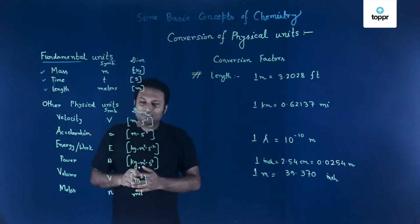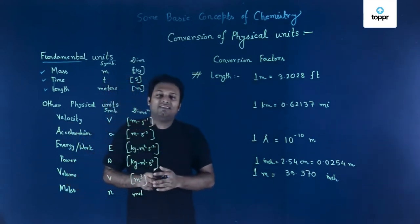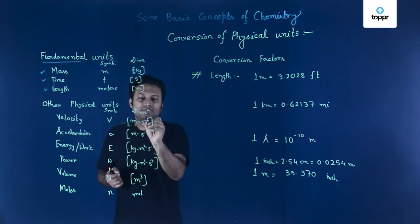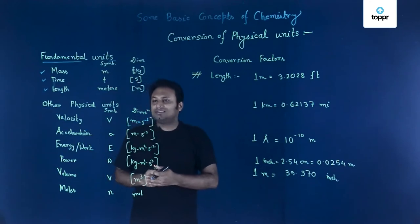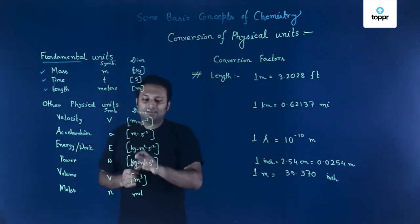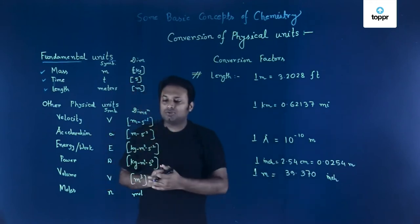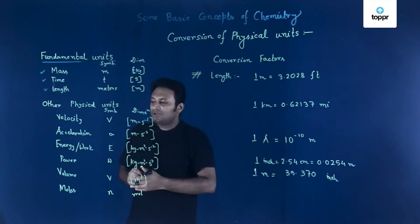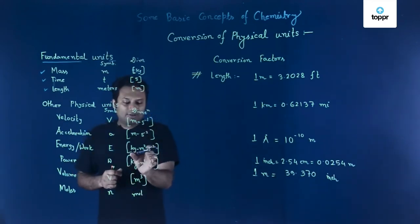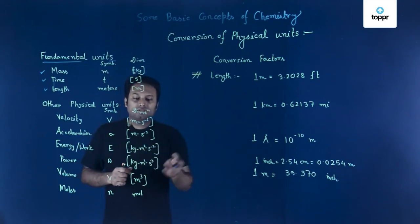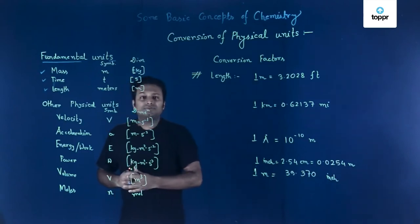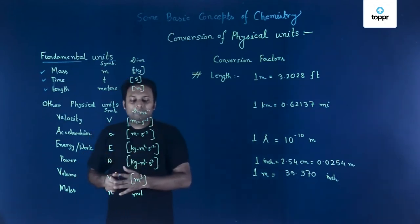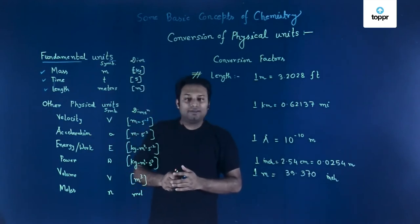Let us start with velocity. Velocity has symbol v and dimension meters per second, which is meter·second⁻¹. Then we have acceleration, with symbol a and dimension meter·second⁻². That is, meter per second square. Another very important derived unit is energy or work, denoted by E, with dimension kg·m²·s⁻². Then power, with symbol W and dimension kg·m²·s⁻³.